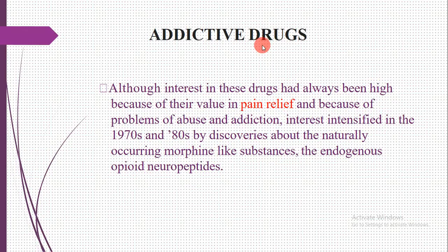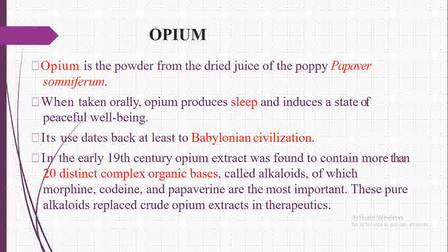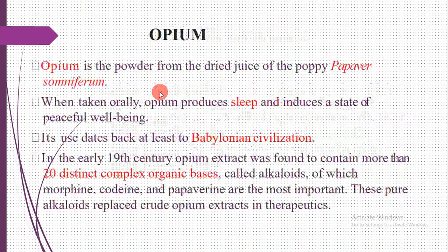Addictive drugs: although interest in these drugs had always been high because of their value in pain relief, problems of abuse and addiction intensified in the 1970s and 80s following discoveries about naturally occurring morphine-like substances — the endogenous opiate neuropeptides. In pharmacognosy, we study different types of medicinal plants, and opium is one of them.